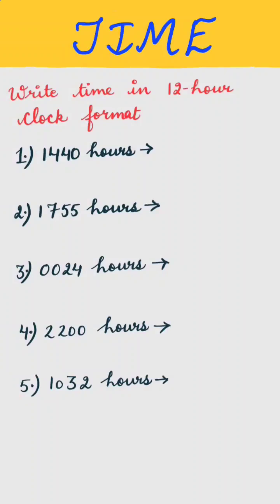Write time in 12-hour clock format. First is 1440 hours. So, this can be written as 1440 minus 12, which is equal to 2:40 PM.